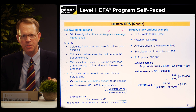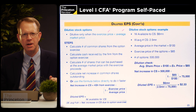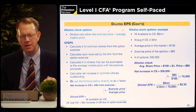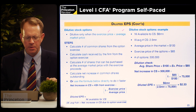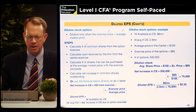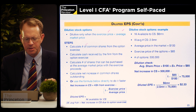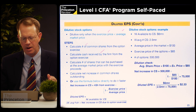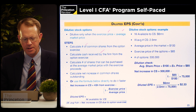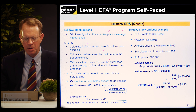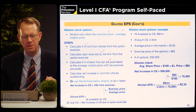They issue additional shares from the exercise of the options and warrants, but then repurchase treasury shares by taking the proceeds from the exercise of the options and buying stock. We calculate the number of common shares from the option exercise, the cash received by the firm, and then the number of shares that can be purchased at the average market price with the exercise proceeds.